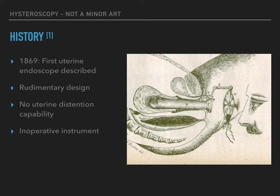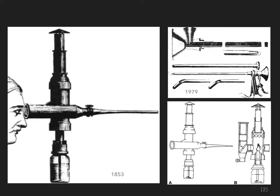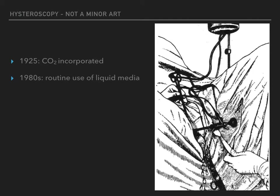Hysteroscopy has been around for quite some time. The first description of a uterine endoscope dates back to 1869. However, due to its rudimentary design and its inability to distend the uterus, it was rendered an inoperative instrument. Here are some diagrams that illustrate the early endoscope. Note the candle in the bottom right.